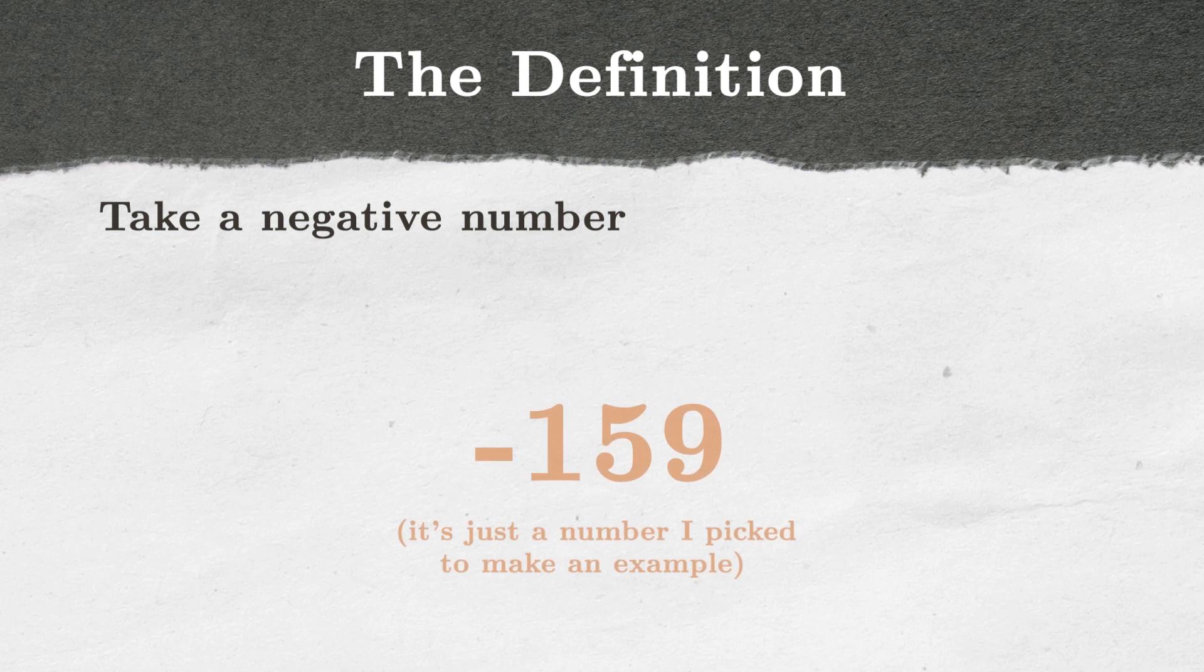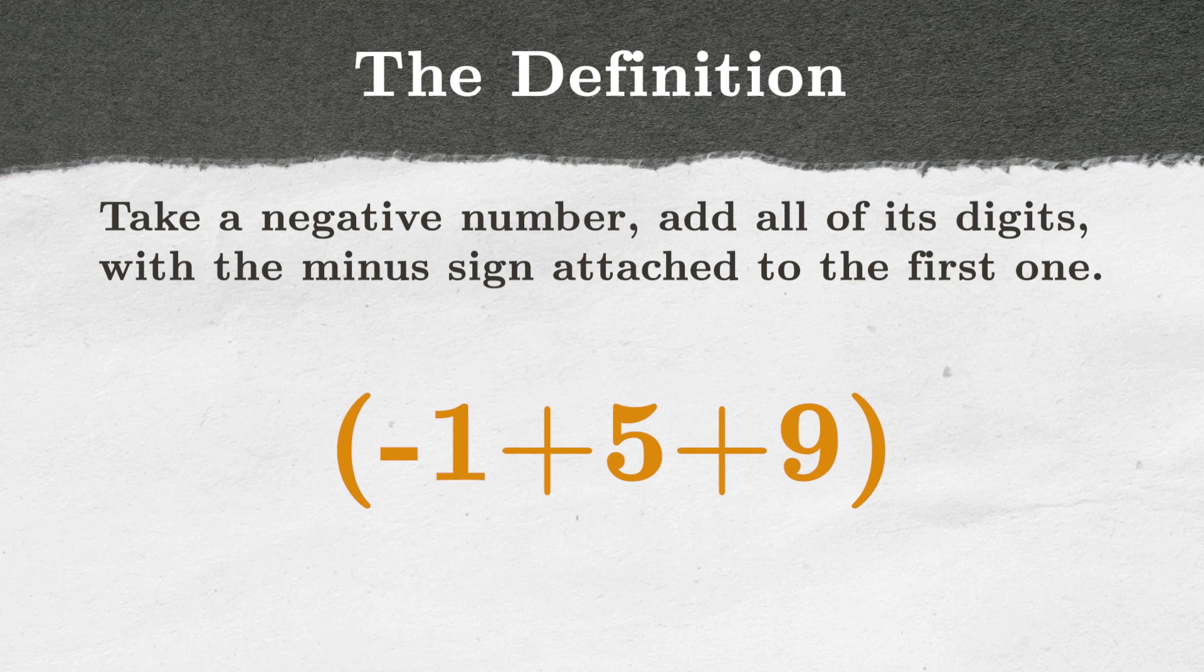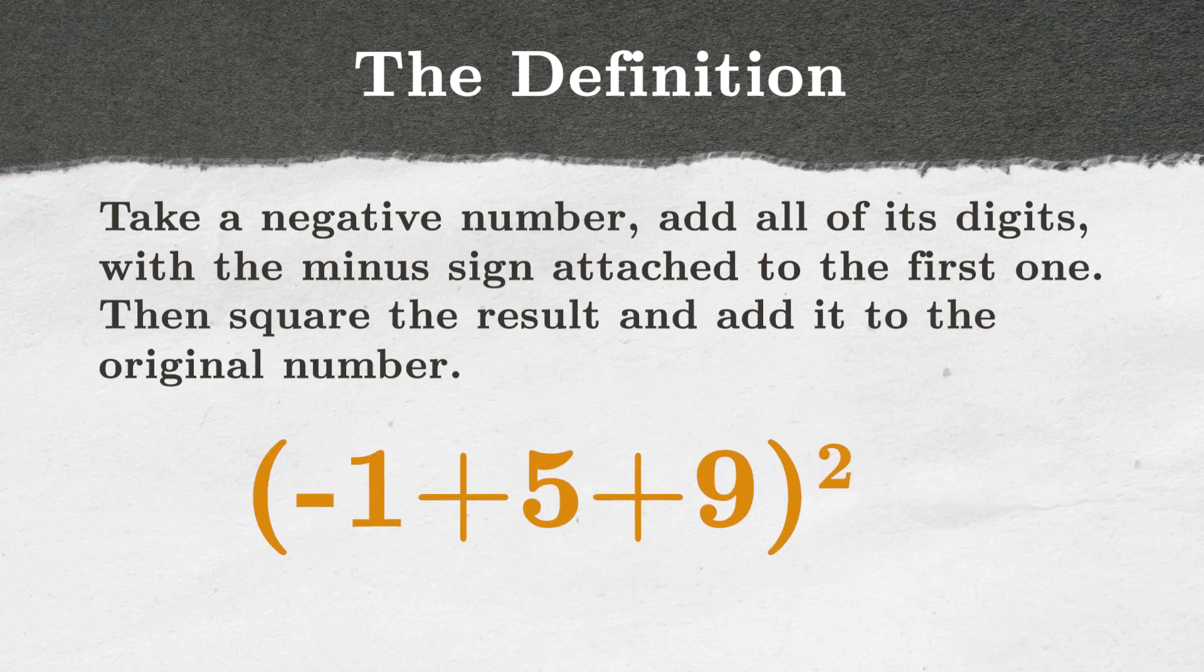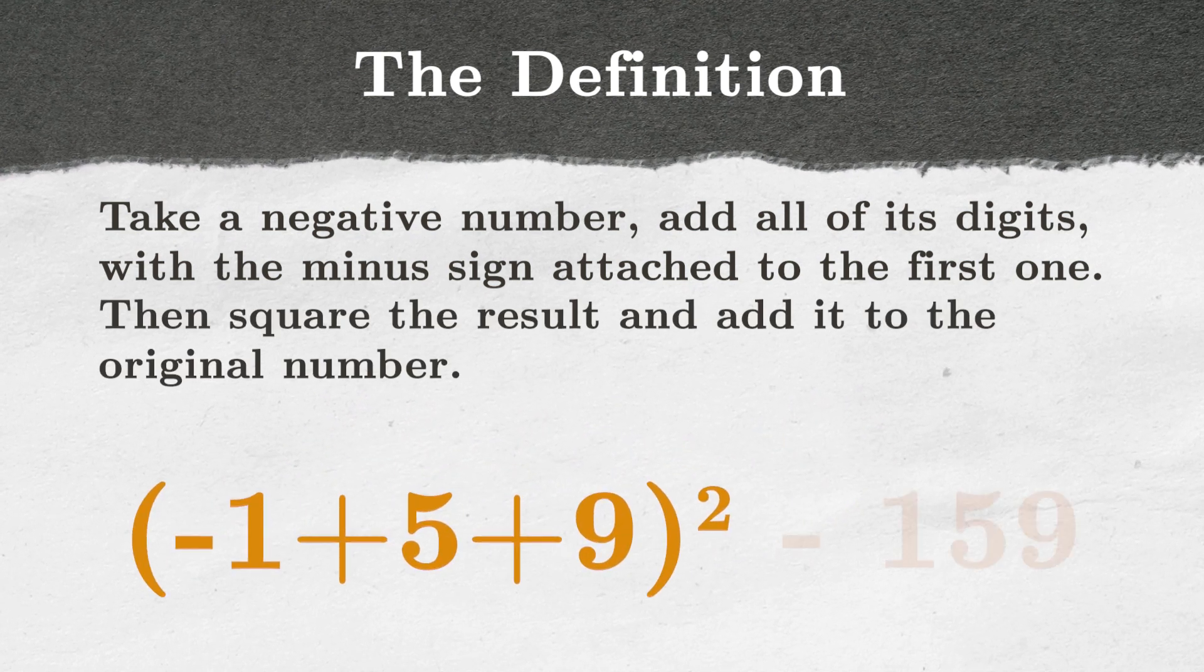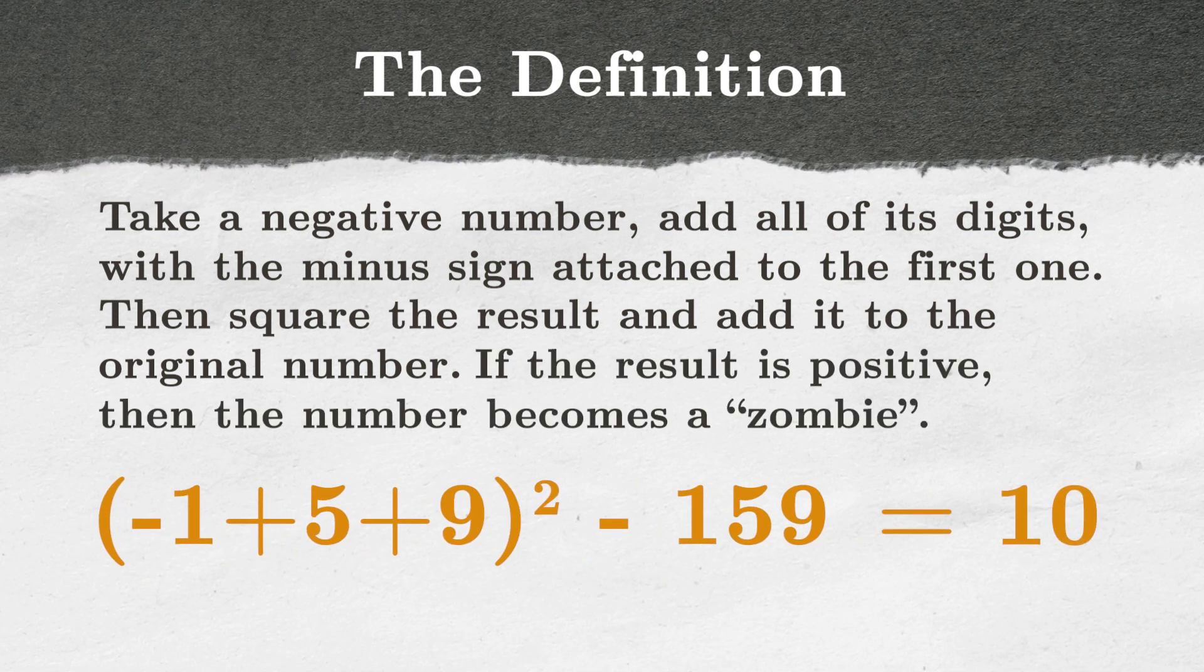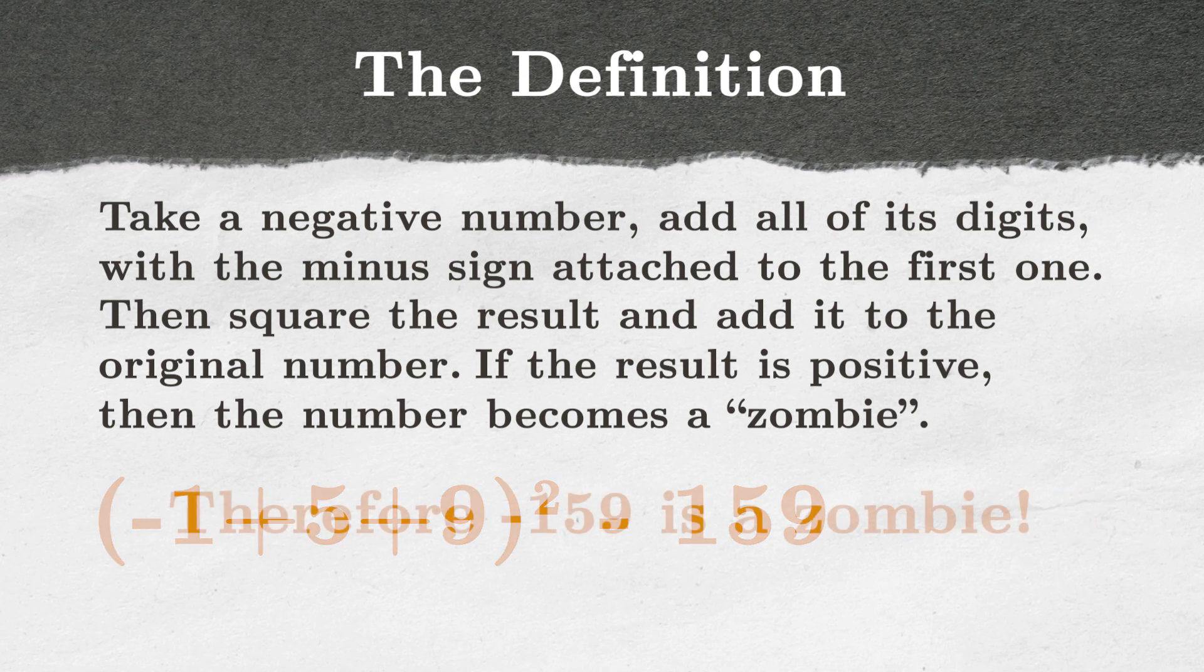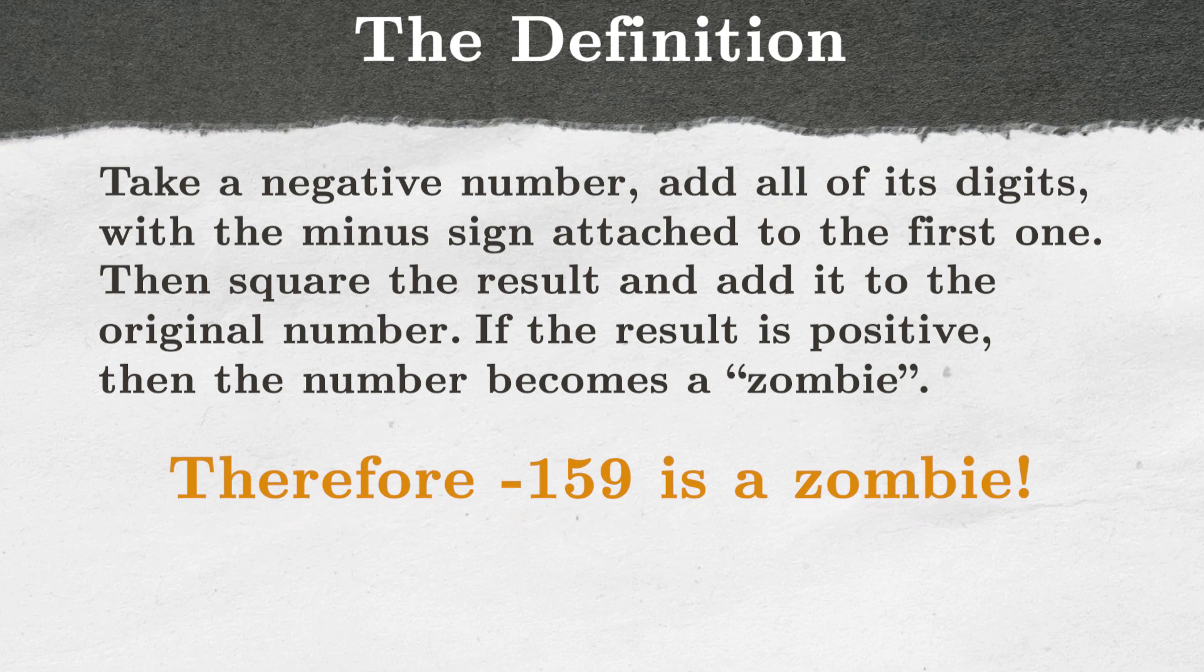Take a negative number. Add all of its digits with the minus sign attached to the first digit. Then square the result and add it to the original number. If the result of this operation is positive, then the number rises from the dead and becomes a zombie. Now we only need to prove that there can only be finitely many zombie numbers. And the world will be basically saved.